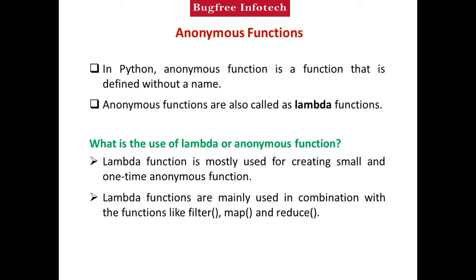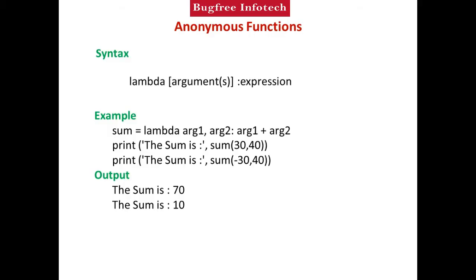Next topic: the syntax to create an anonymous function. First, use the 'lambda' keyword. Next, provide the arguments — any number of arguments can be used. Then use a colon, followed by the expression. Using this syntax, we can create a lambda function. Let's create one example.